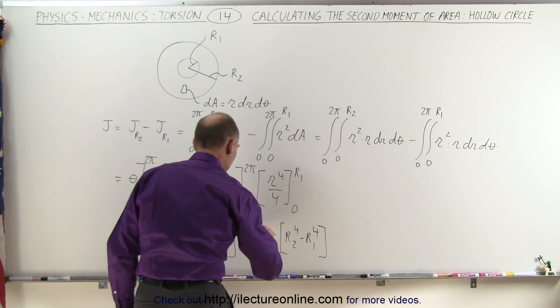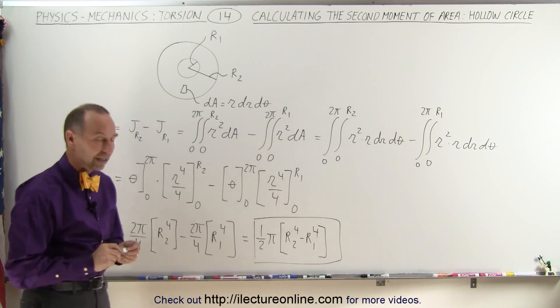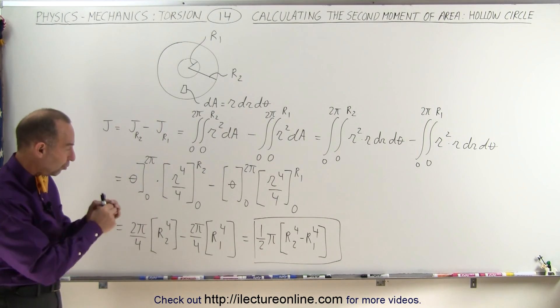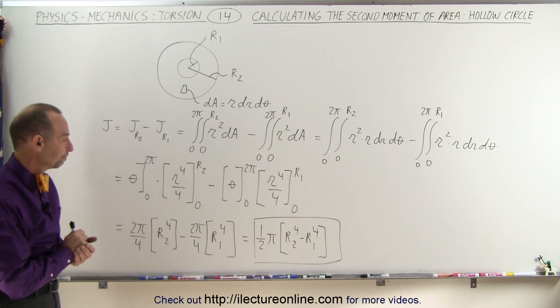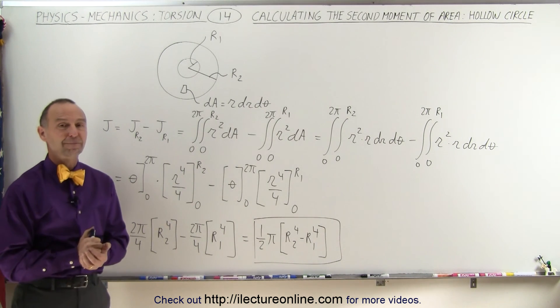and that would be the torsion constant if we have a wire or a small rod or something like that that has a hollow portion with radius R1. And that's how it's done.